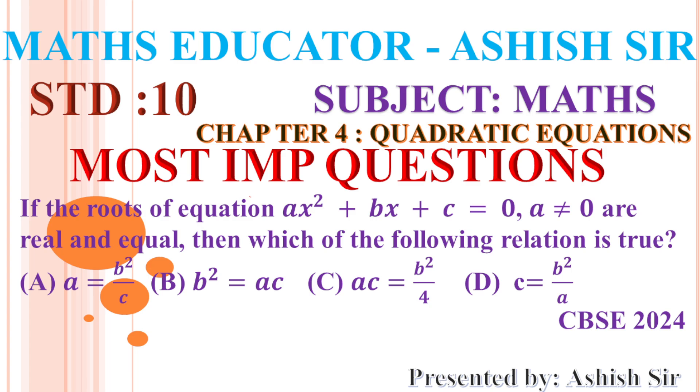The most important question is: if the roots of the equation ax²+bx+c=0, a≠0, are real and equal, then which of the following relation is true?